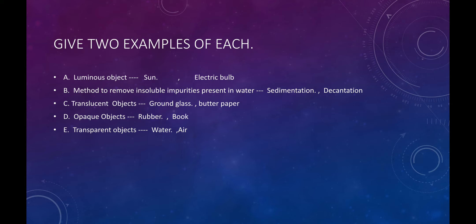C — translucent objects: ground glass and butter paper. D — opaque objects: rubber and book. E — transparent objects: water and air.